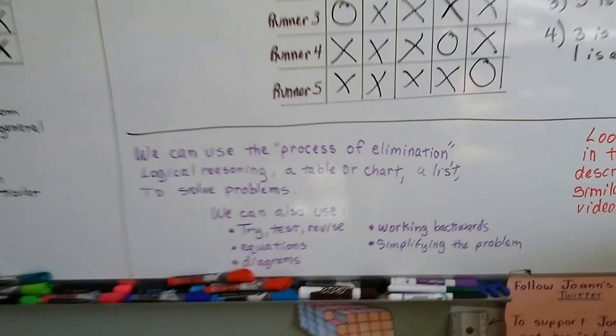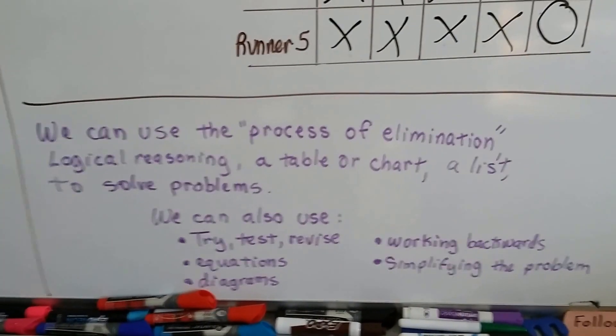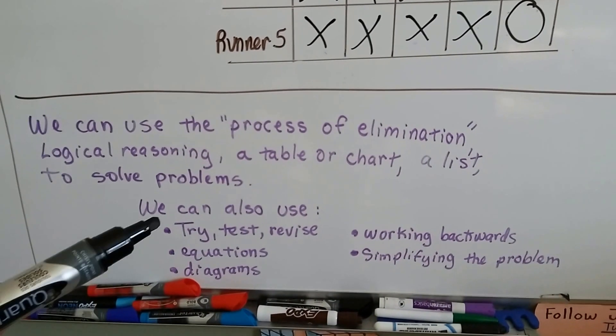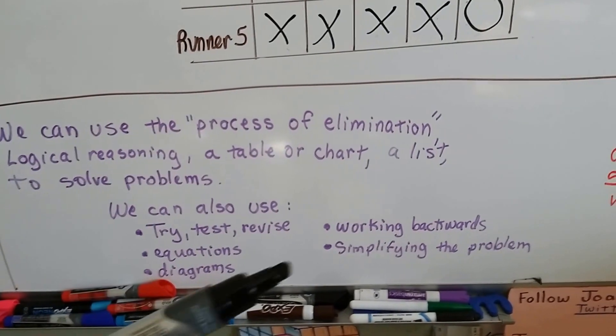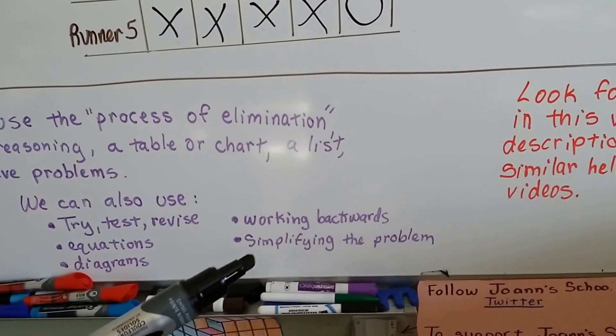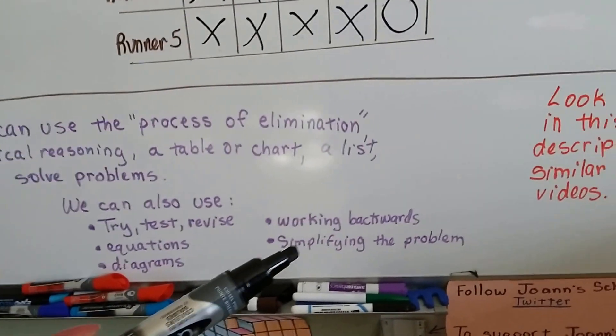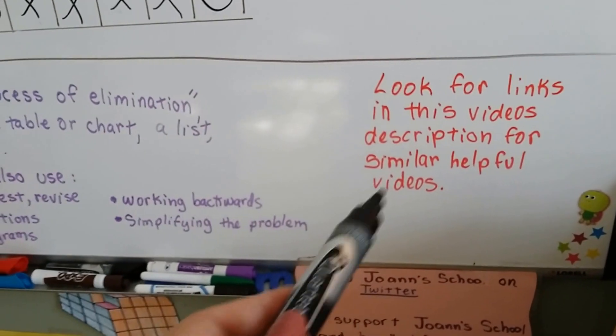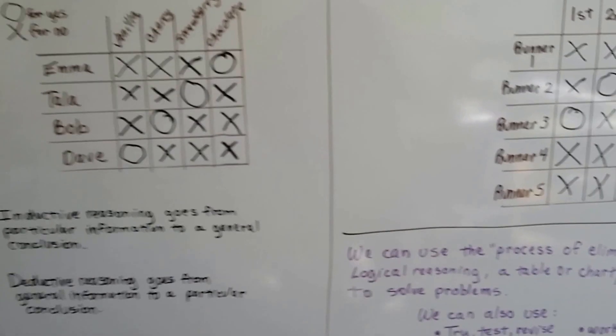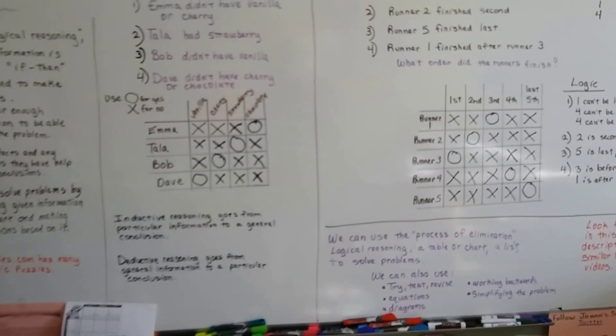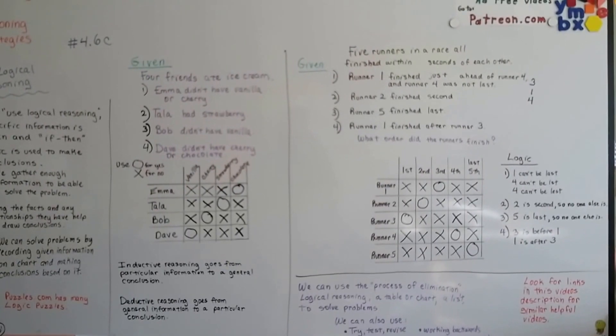And then that means he's not that one and he's not that one. And then through the use of logical reasoning, we figured out the place that all the runners came in. We know every order that they came in and we did it by using logic. So we can use the process of elimination. We can use logical reasoning, a table or a chart, a list to solve problems for logic. And for any problem, we could do the try, test, revise. That's the guess and check and guess again version that you learned in grade school. We could write equations or make diagrams. We could work backwards. Or we could try simplifying the problem and breaking it down into an easier version and solving that first and then try solving the harder version. So look for links in this video's description for similar helpful videos. The previous two videos that talk about inductive reasoning and deductive reasoning, I'll have a link for those. And try checking out puzzles.com for logic puzzles. They're actually kind of fun and they help teach you logical thinking. I'll see you next video. Bye.